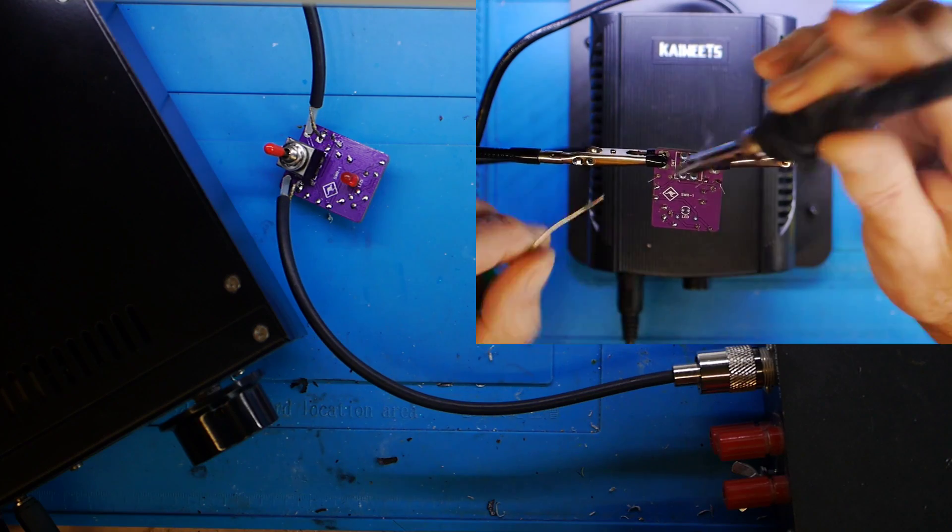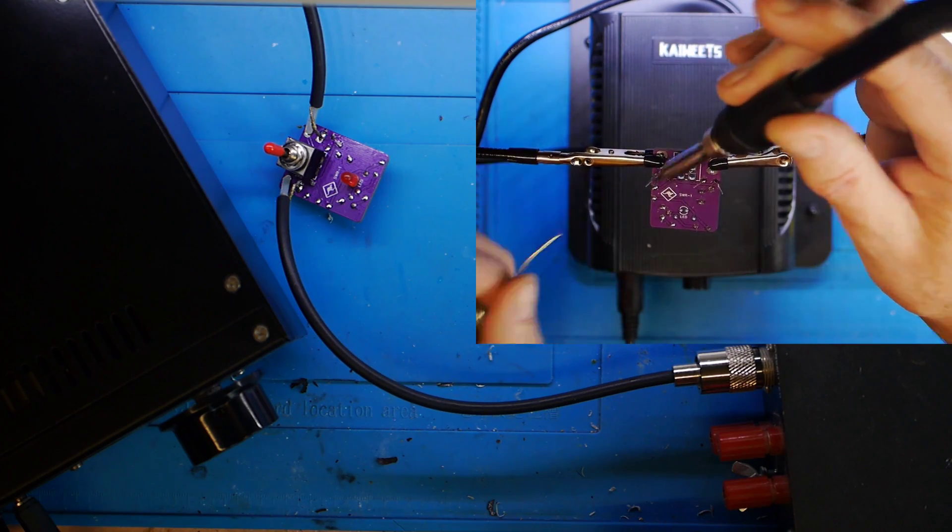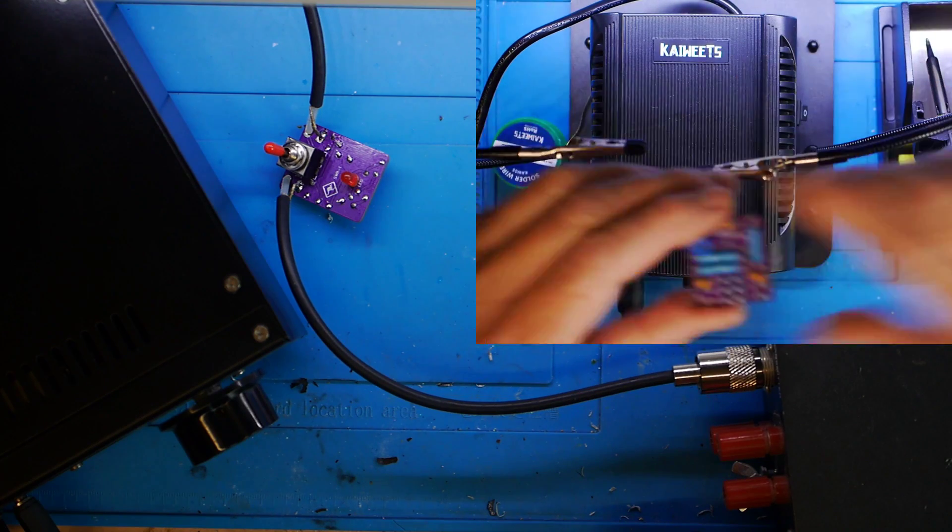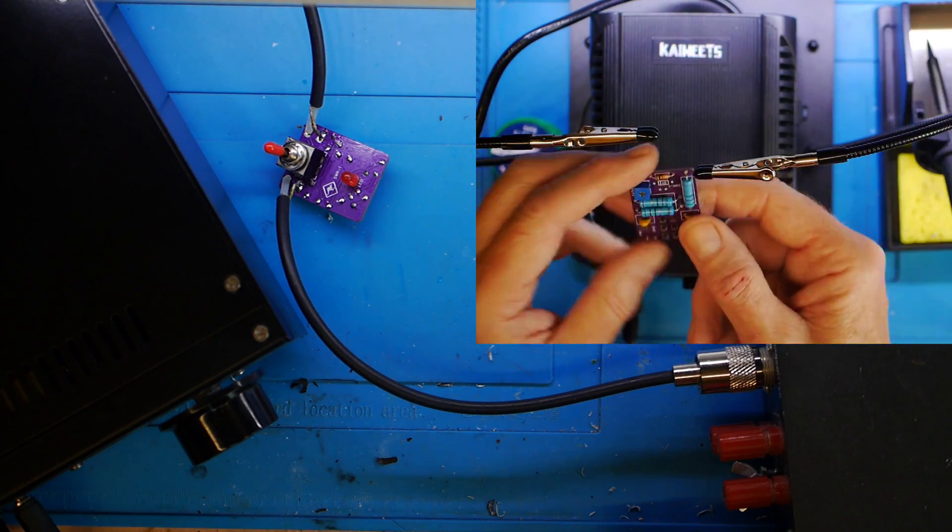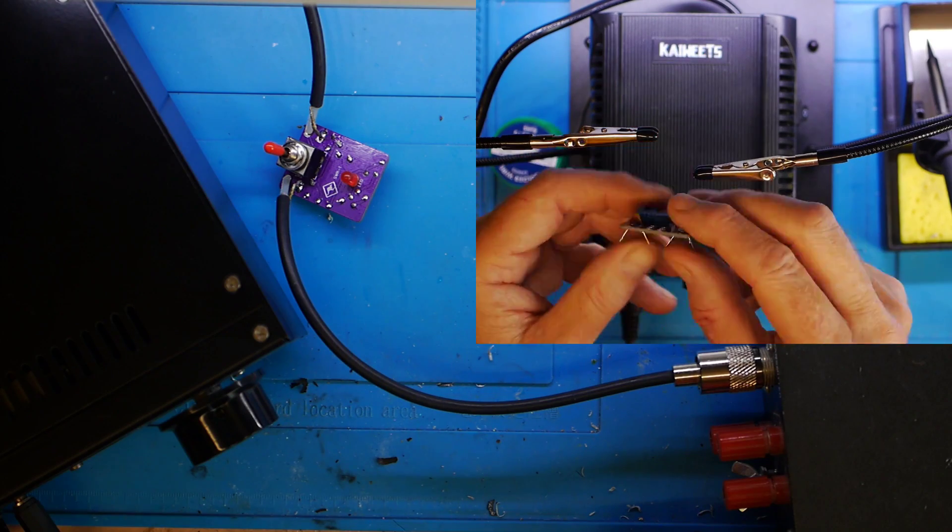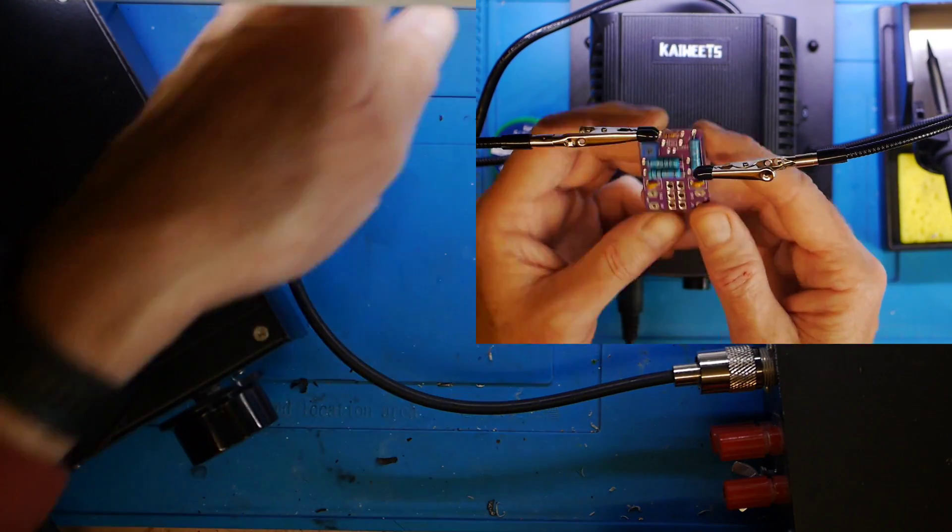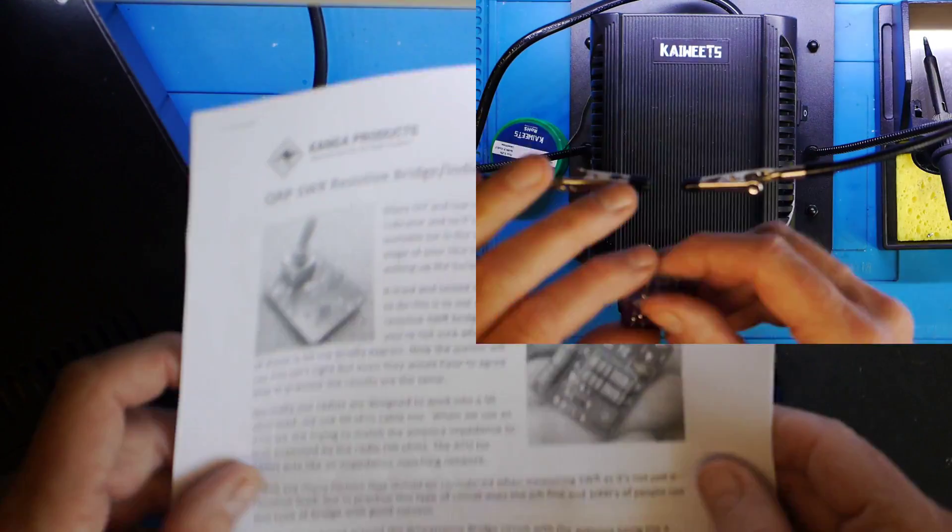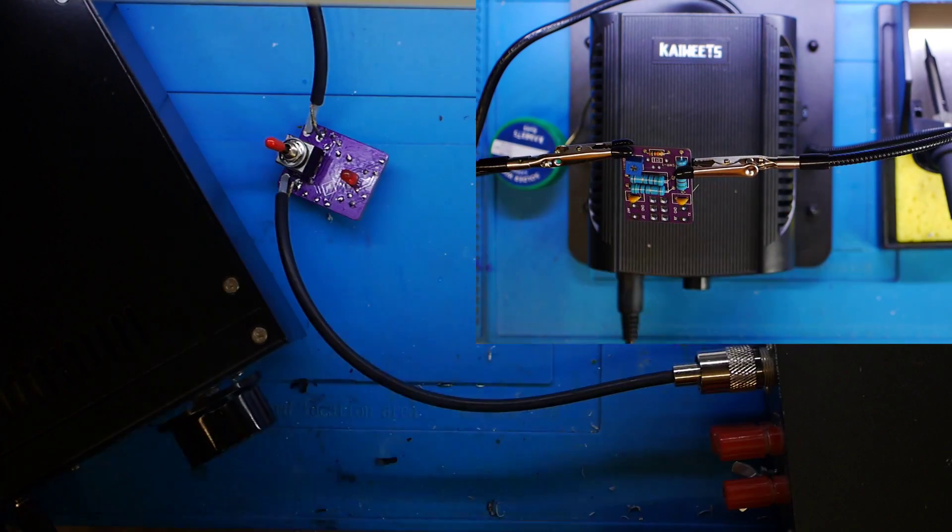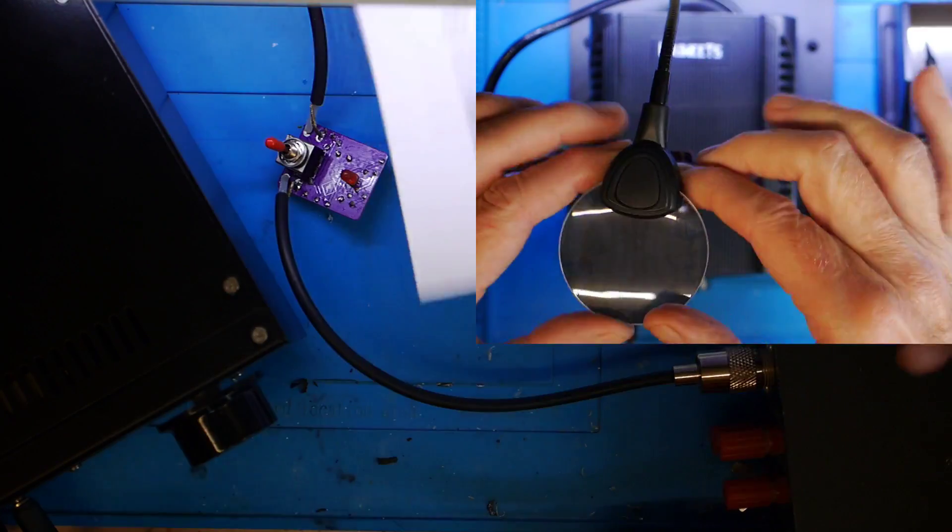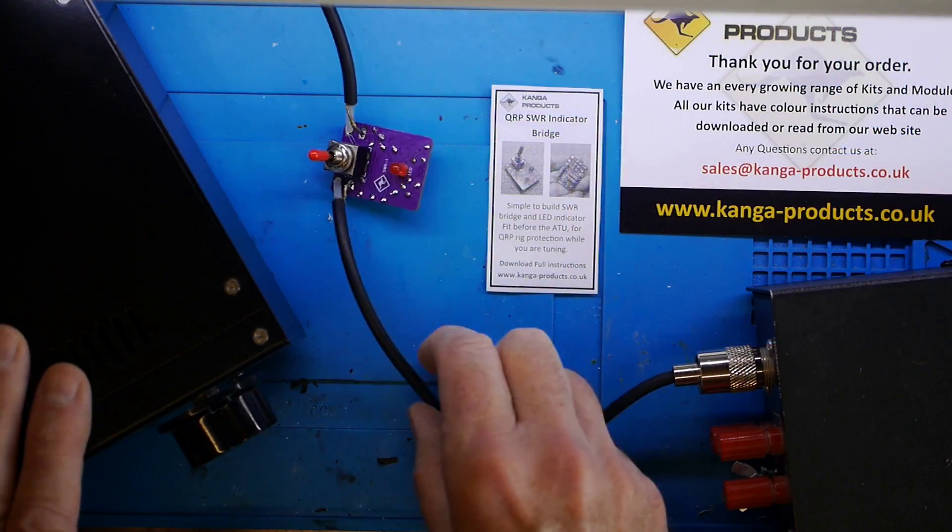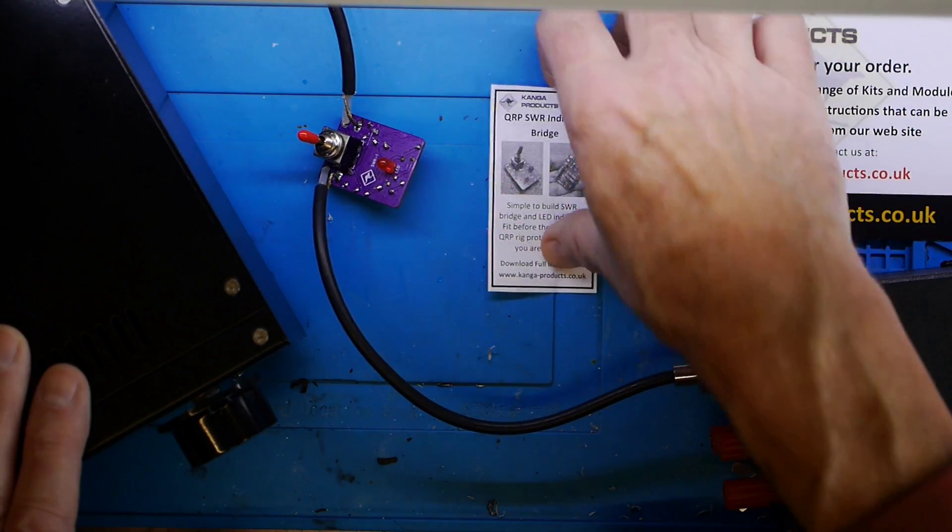Now this is a little kit from Kanga Products, and it's a QRP SWR indicator bridge. Now apparently there's lots of controversy about resistive SWR bridges, but as the blurb that came with the kit, which here is some of the paperwork, is actually rather detailed. But the beauty of this little kit is that it always presents 50 ohms to the radio no matter what. So that's what it's called, the QRP SWR bridge, Kanga Products.